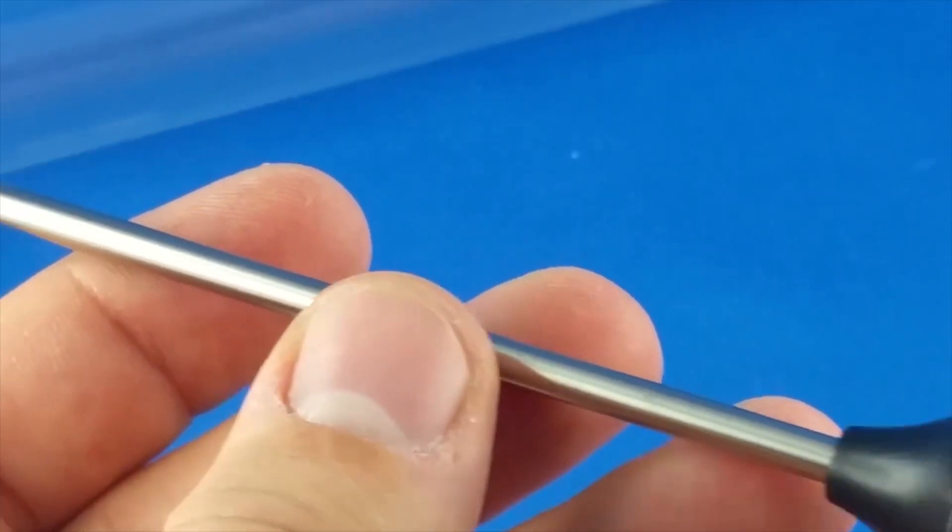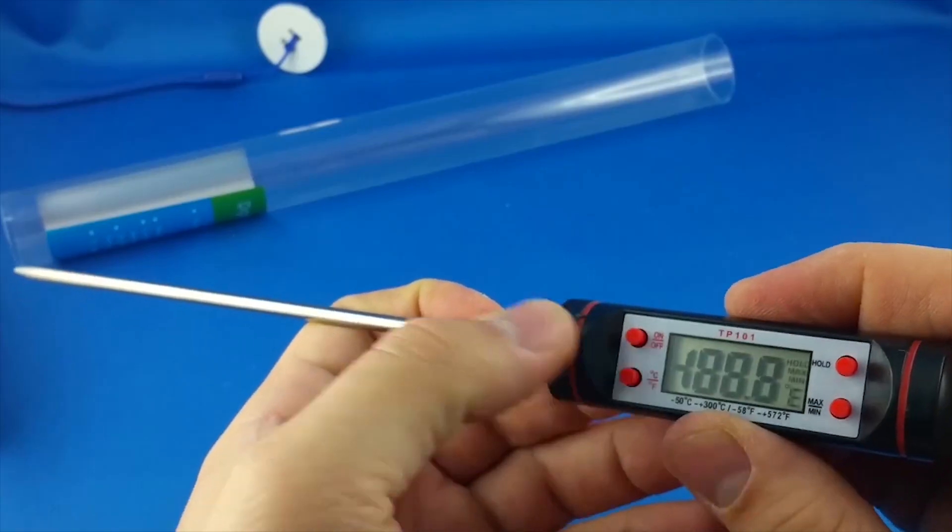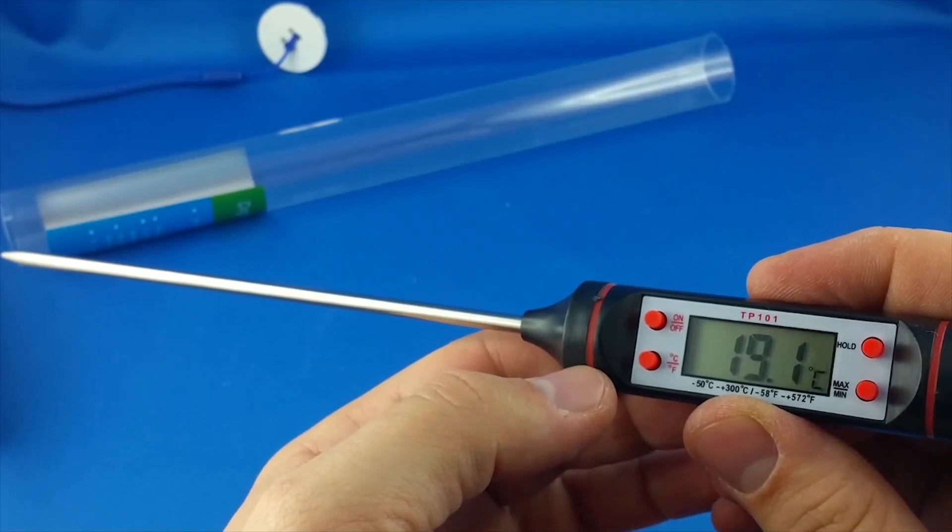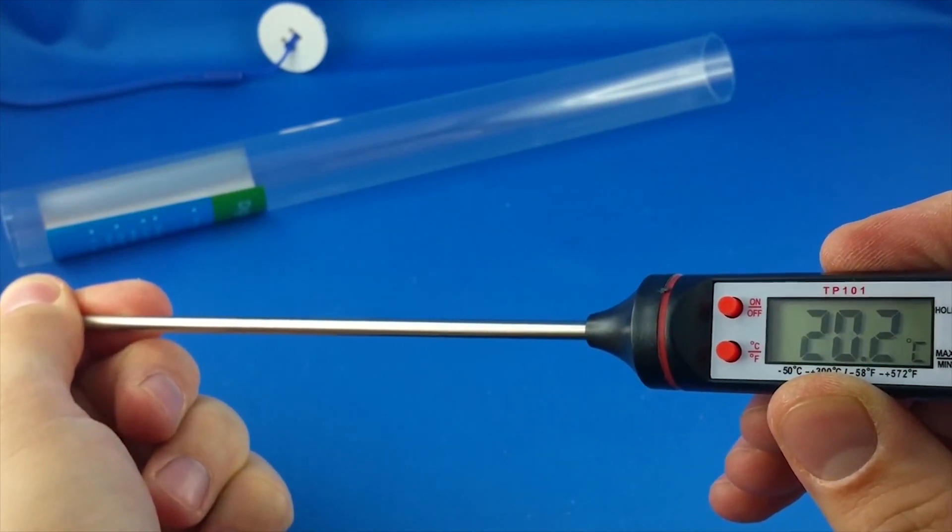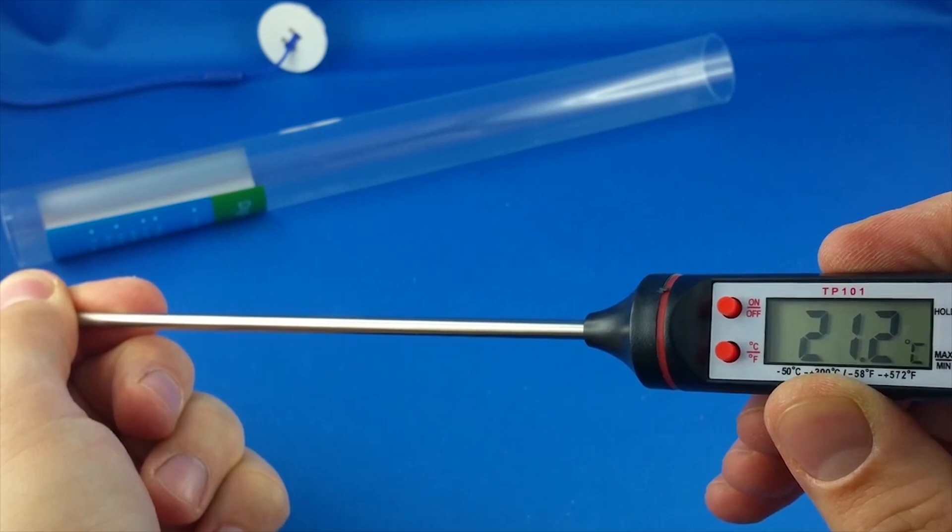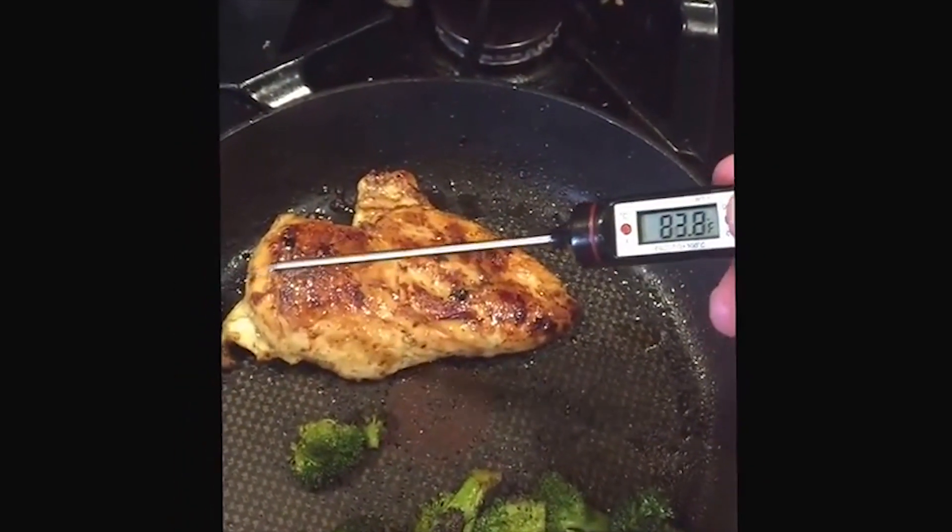This is a digital thermometer with a long and sharp needle. It starts working immediately and shows current temperature in Celsius and Fahrenheit. The thing could be used while roasting meat, just like in this video.